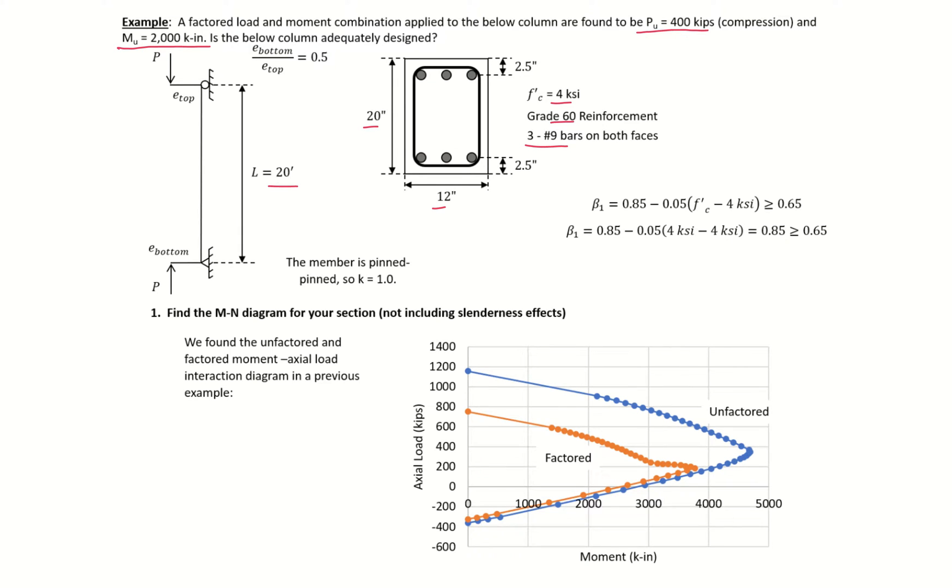Our column is 20 feet long with a ratio of bottom to top eccentricity equal to 0.5, which tells us about the ratio of bottom to top moment as well. We have a pinned column so k equals 1.0.